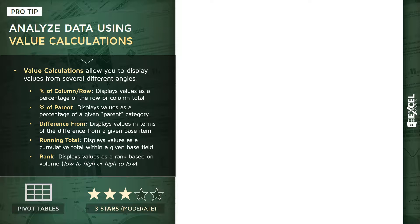You can show values as the difference from, or percent difference from, a given base item — great for things like month-over-month or year-over-year changes. You can calculate running totals, which displays values as a cumulative total within a given base field. Or you can show those as ranks, which shows the rank of that volume based on low-to-high or high-to-low rules. Keep in mind this isn't a comprehensive list; there are additional options as well.